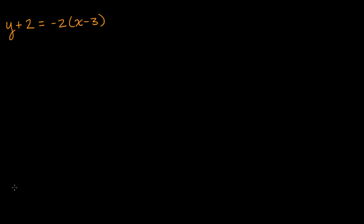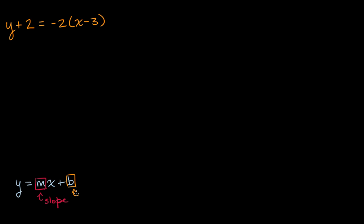What my brain wants to do is — I know a few forms where it's easy to pick out the slope. If I can manipulate that equation to get into the form y is equal to mx plus b, well then I know that this m here, the coefficient on the x term, that's going to be my slope. And b is going to be my y-intercept.